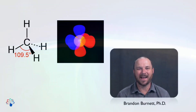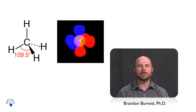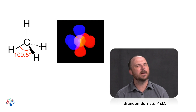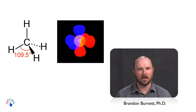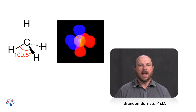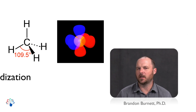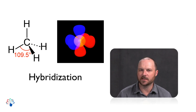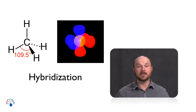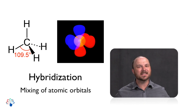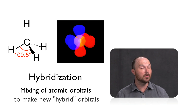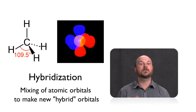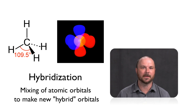Hey everybody, welcome back. Today we're going to be talking about some weird things that we start to see once we start making molecules. This is going to bring up a new topic for us called hybridization — the mixing of atomic orbitals to make new hybrid orbitals that are suitable for bonding.